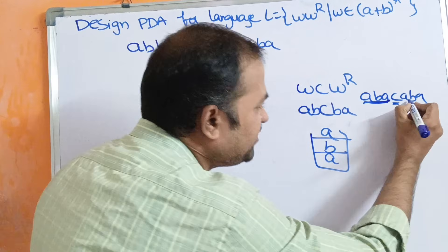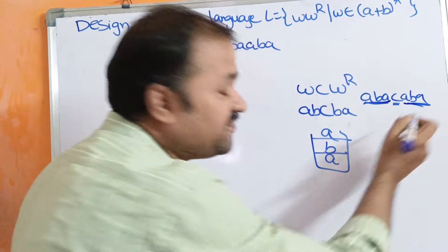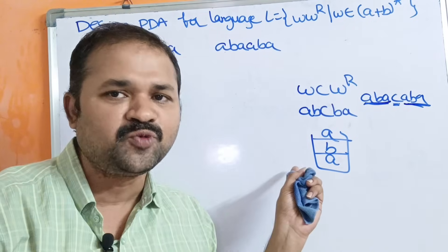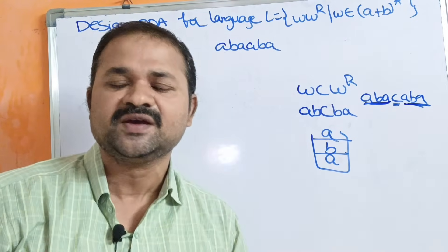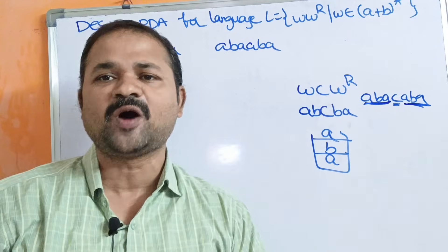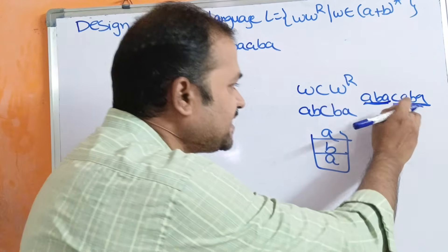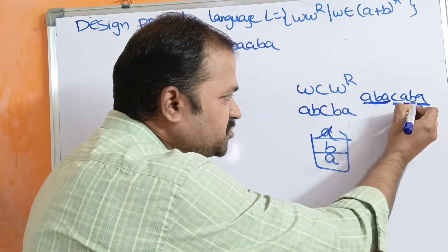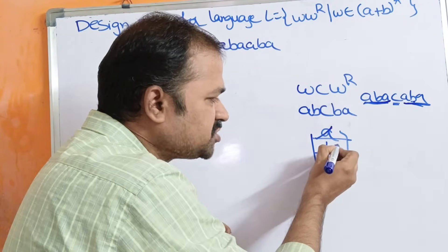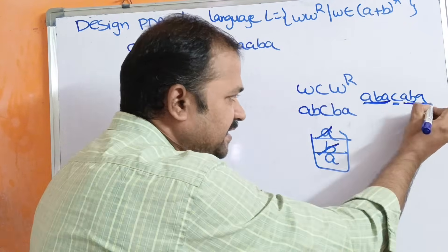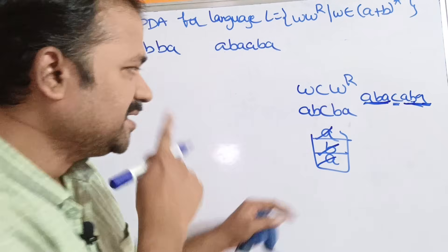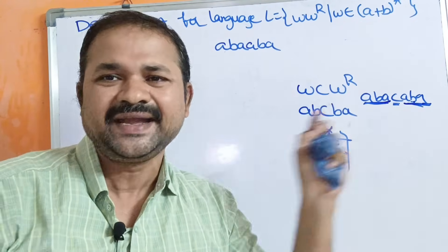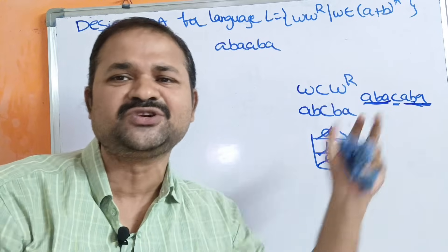After C, this is nothing but the reverse of the string. So for every A, we pop the topmost A, and for every B, we pop the topmost B. Here A matches the topmost character A, so A is popped. Next B matches the topmost B, it is popped. Next A is popped. The center marker makes this very easy to solve.